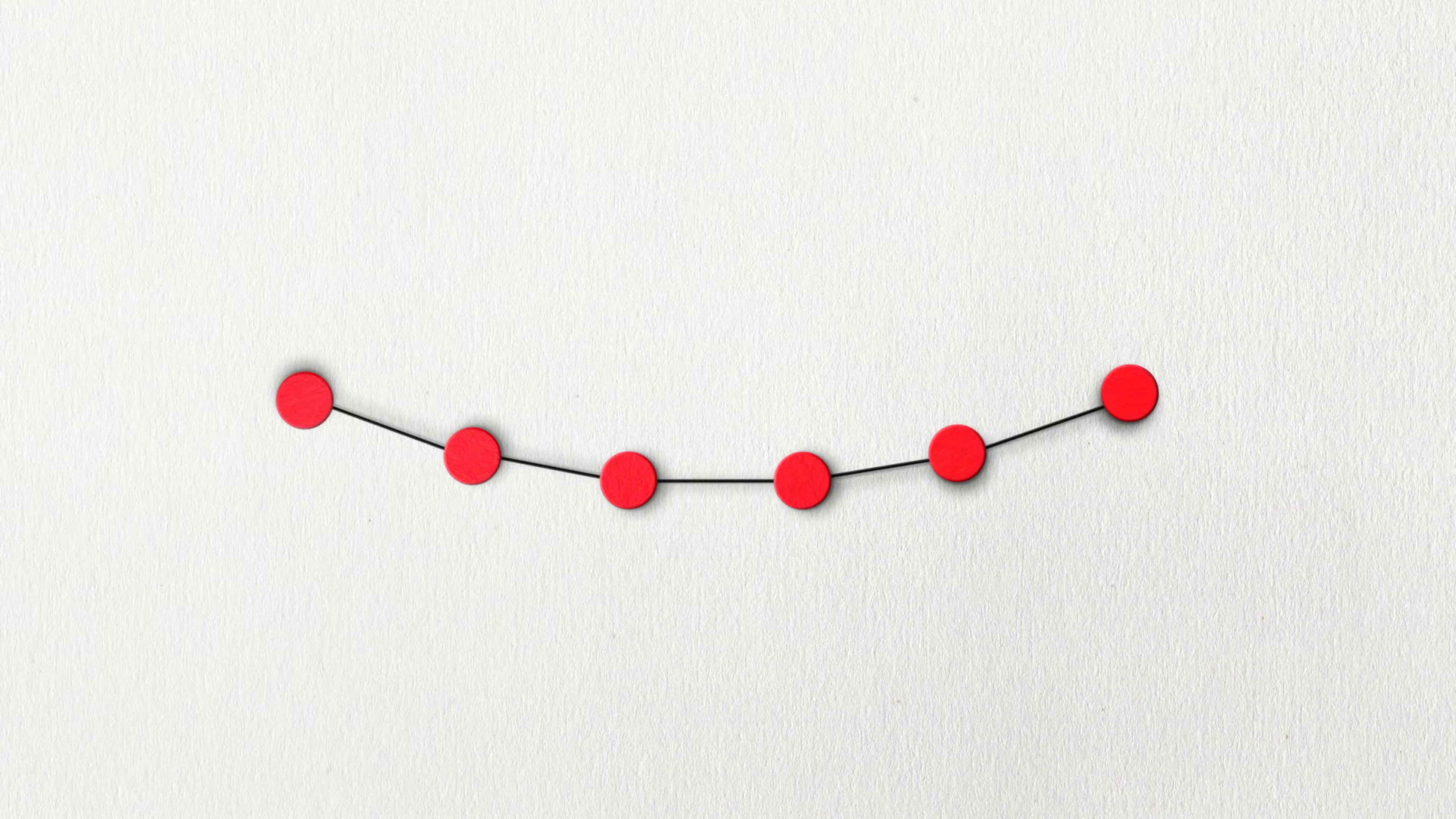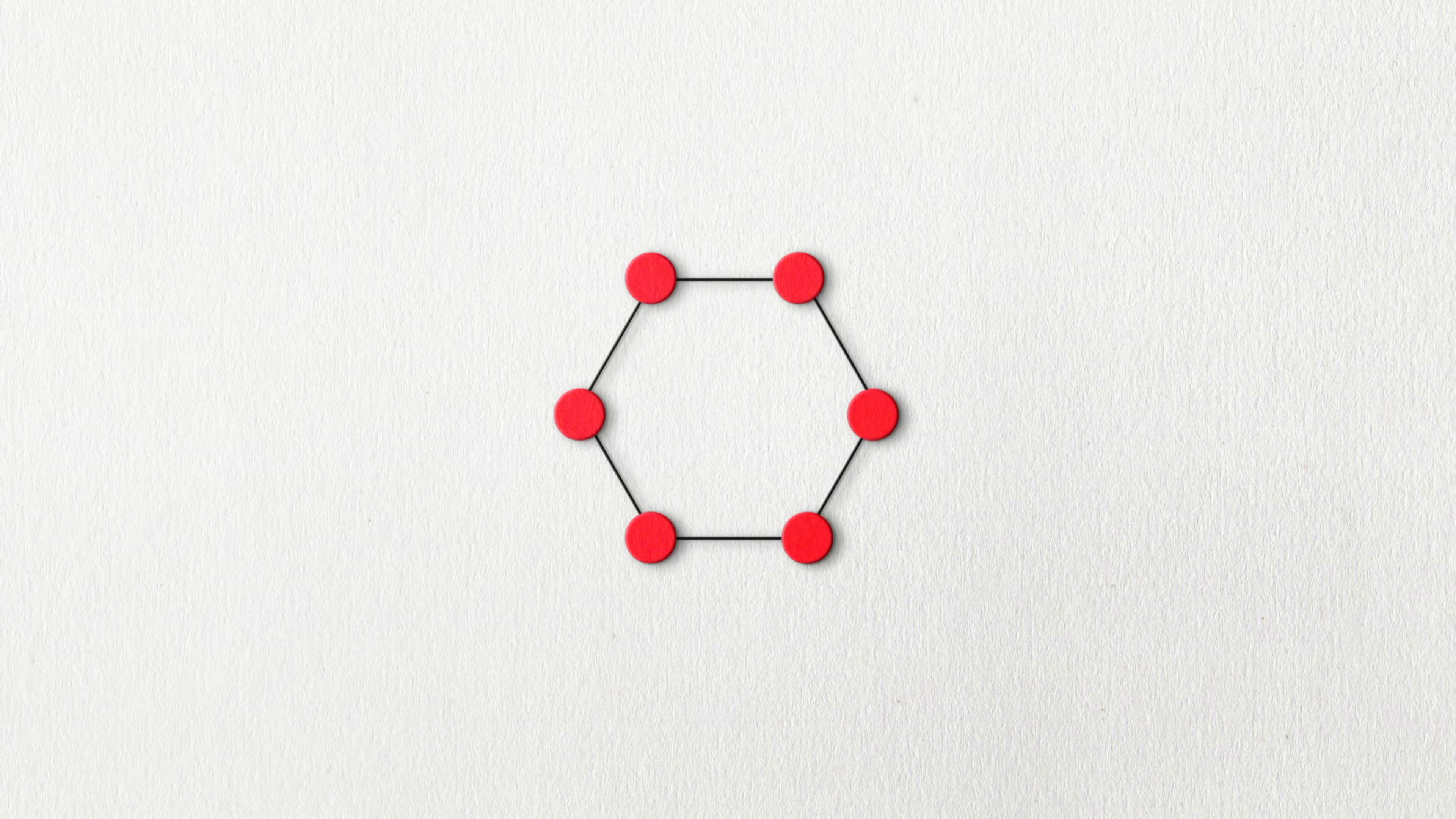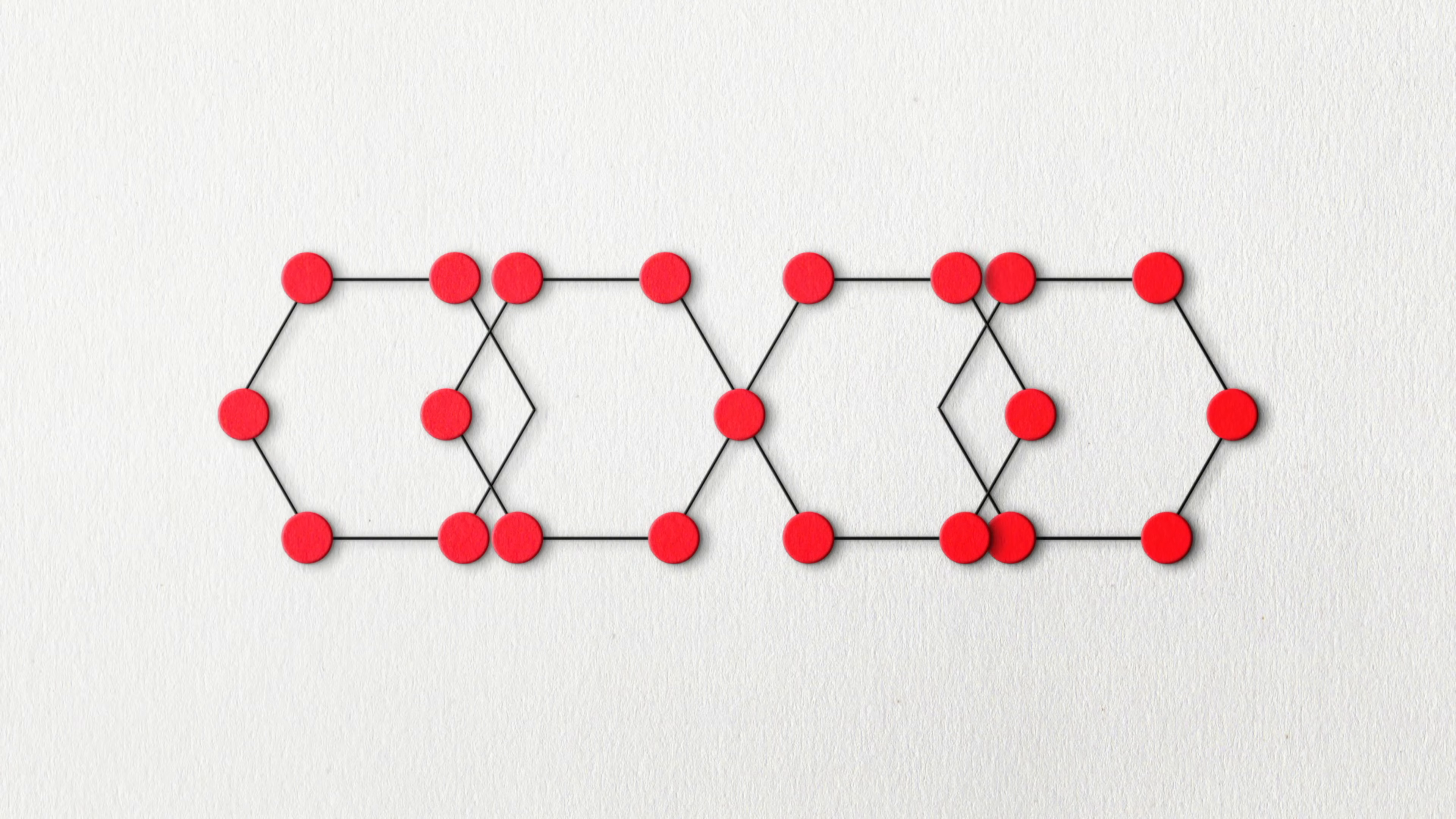Likewise, carbon chains can link together, thereby forming branched chains. Now, to take this idea a step further, check this out. Carbon chains can bind to carbon rings, forming large sheets resembling chain-link fences.